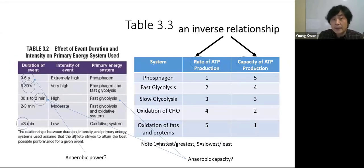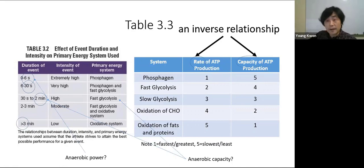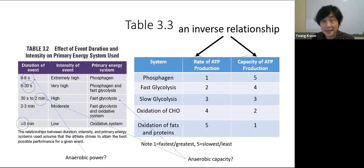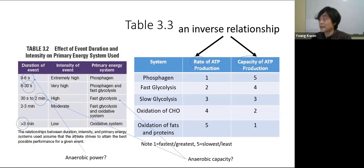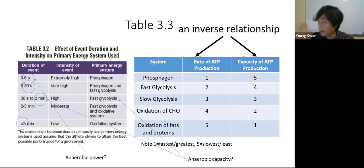Important terminology: 'rate' of ATP production means speed, and 'capacity' means total amount. The phosphagen system has the highest rate but lowest capacity. Oxidative fat and protein metabolism has the lowest rate but highest capacity — it takes time but releases a lot of ATP. You must understand both terms. This is our quiz question — the answer to highest capacity of ATP production is oxidation of fat and protein.